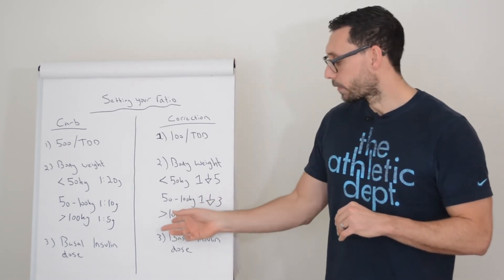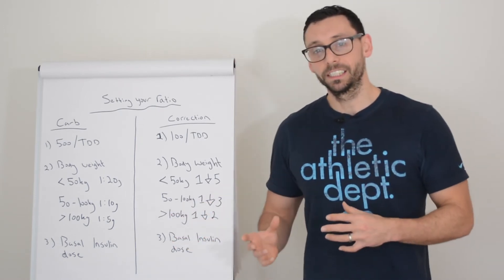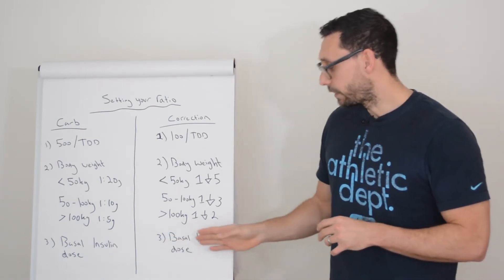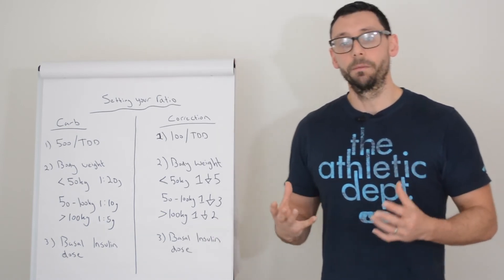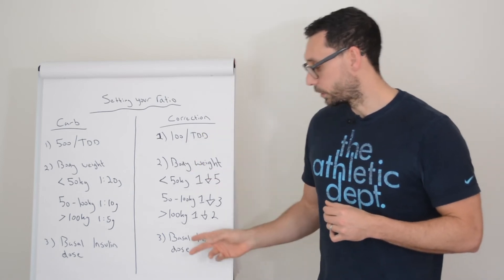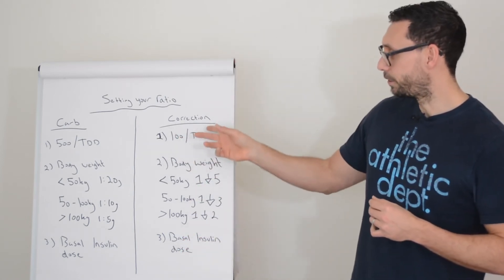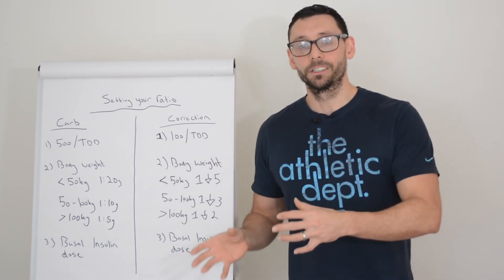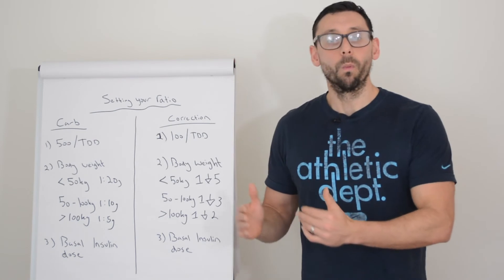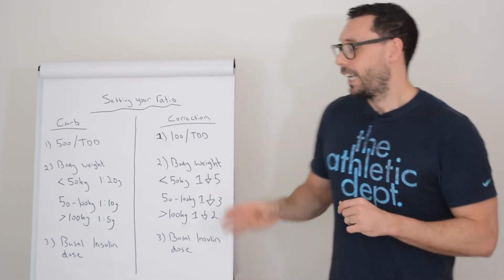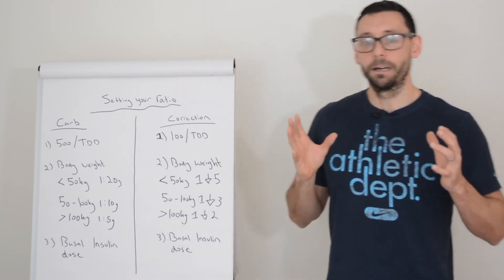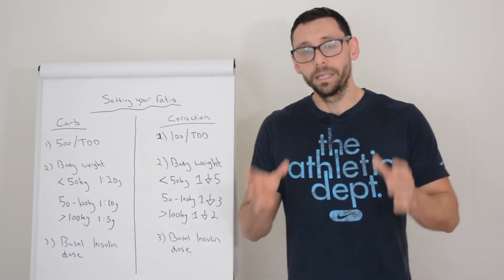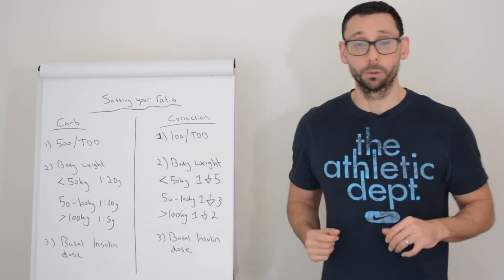Now obviously the heavier you get or the more that you weigh and the more resistant you are to your insulin, then you might find that this number even becomes lower. And number three, again we can use our basal insulin to give us an informed opinion about what sort of ratio to expect. Because again, if you're taking 100 units of your background insulin, for example, 100 divided by 100 is one. So you're already at one unit drops you one. So then when we're factoring our rapid insulin on top of that, we're probably going to be expecting one unit drops us below one millimole per liter, so that means you're very resistant to your insulin.